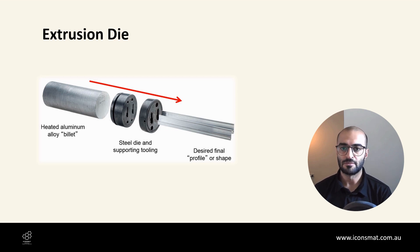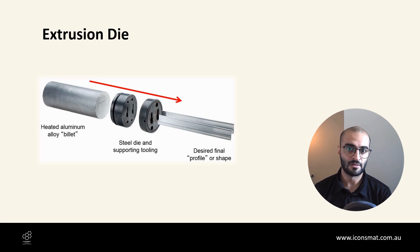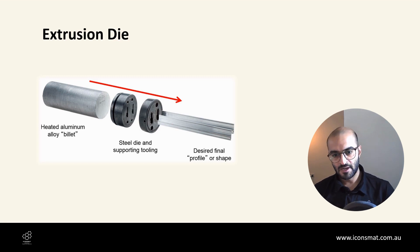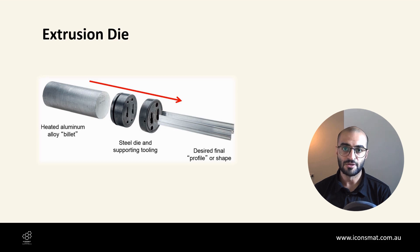This profile is customized by the client and determined by where it's going to be used — whether it's going to be used as a window frame or as a structural frame in other sorts of industries. This die is being designed based on that. So the aluminium comes out like a spaghetti after it's been heated and passes through the die.